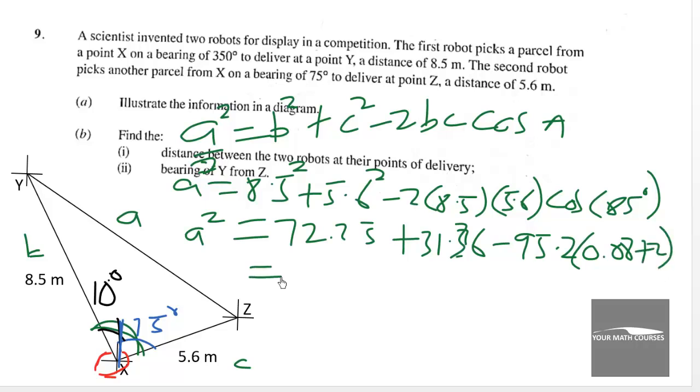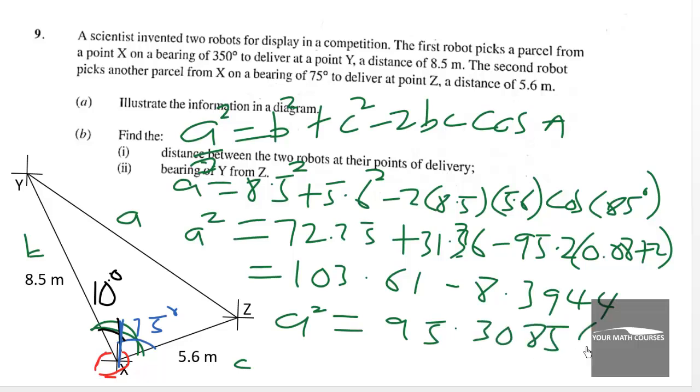So when we simplify this we are getting 103.61 minus 8.3944 so A squared will be equal to 95.30856. So A will be equal to square root of 95.30856 which is equal to 9.76 to 2 decimal places, 9.76 meters, 9.76 meters.